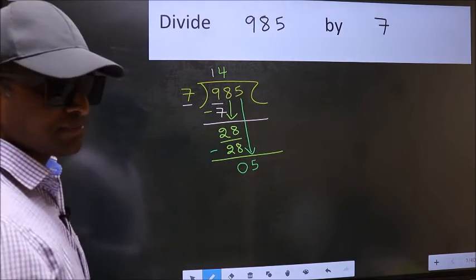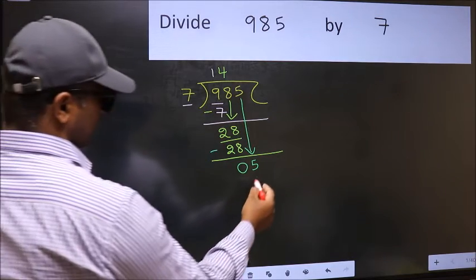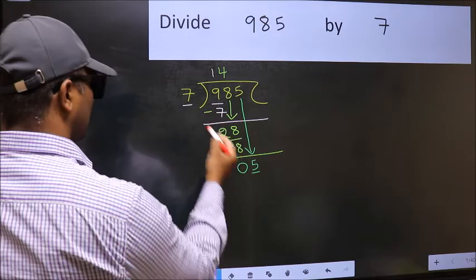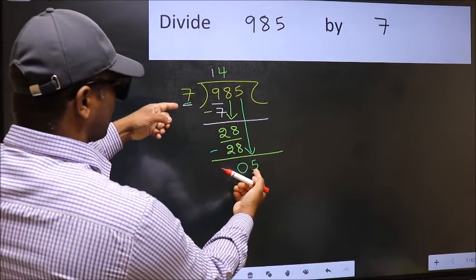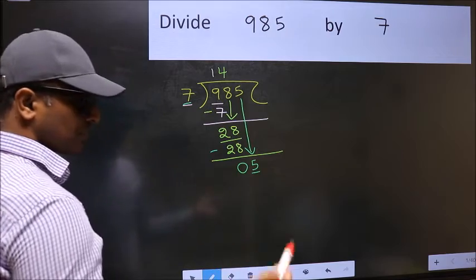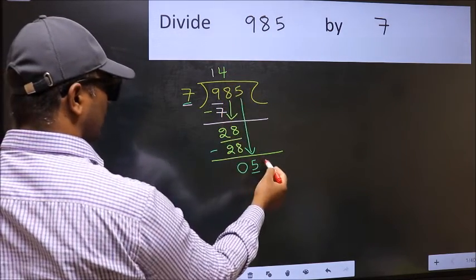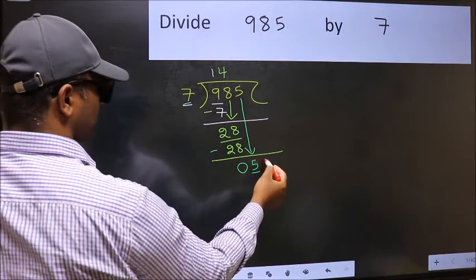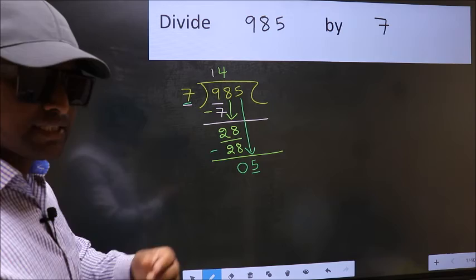After this step, the mistake happens. Here we have 5 and here 7. 5 is smaller than 7. So what many do is they directly put a dot and take 0, which is wrong.